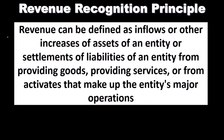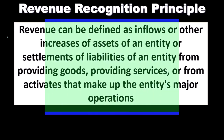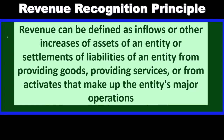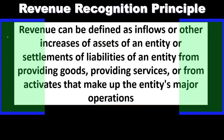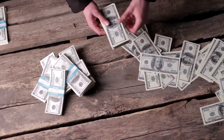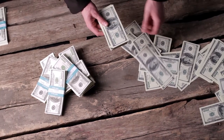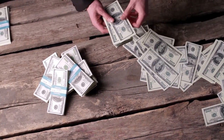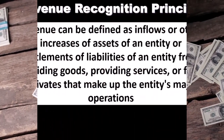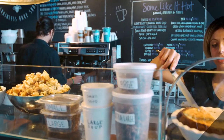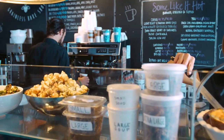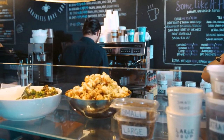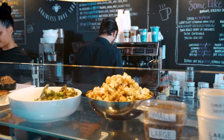The revenue recognition principle, in general terms: we're going to recognize revenue when it has been earned, as opposed to when cash is received. That's probably what most people would say as the revenue recognition principle. But we want to be very specific and able to apply this to different types of businesses — some businesses sell goods and inventory, while others provide services.